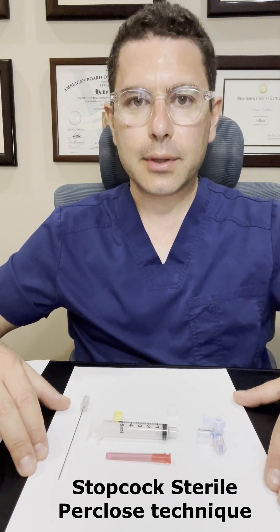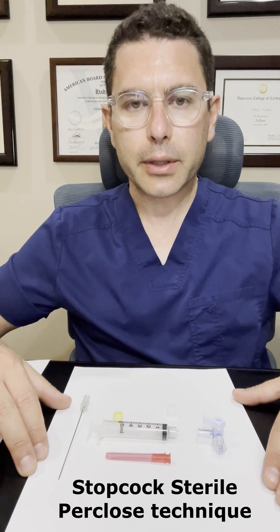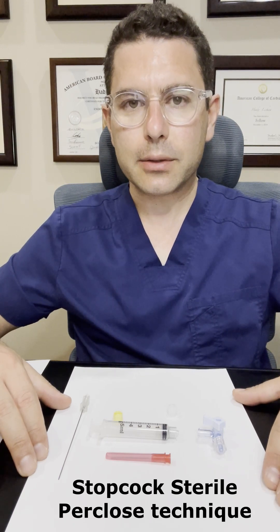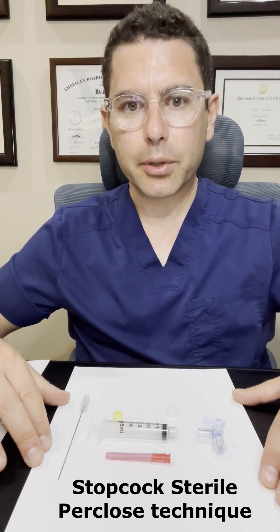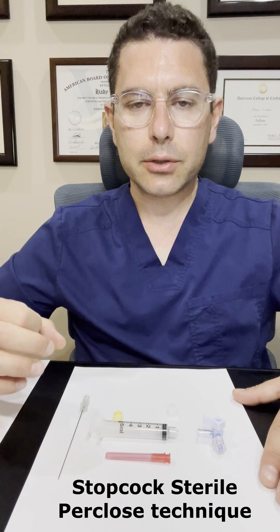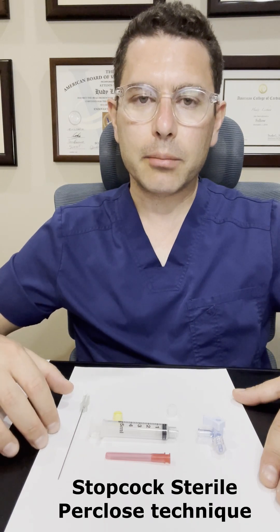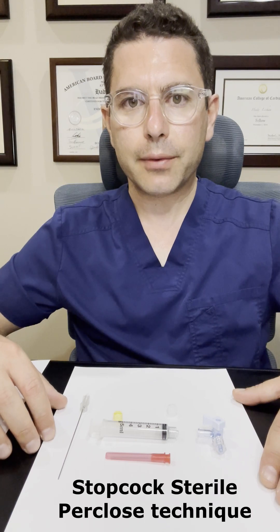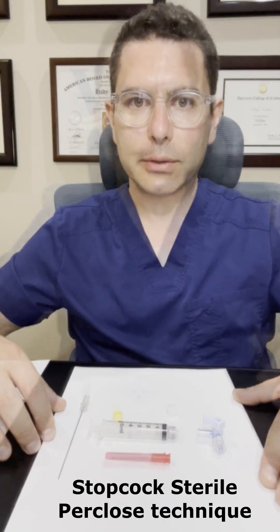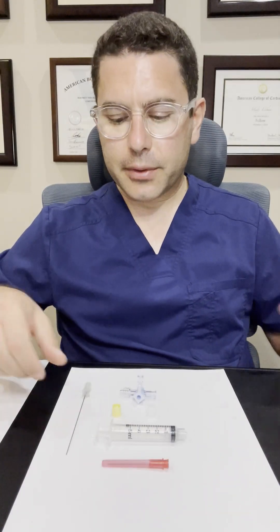The advantages of this stop-cock technique is not only it's simple and maintains sterility, but it also pulls up on the non-locking suture of the per-close, which cinches down on the arteriotomy site and minimizes the oozing around the large-bore sheath in a frequently anticoagulated patient. So let's describe the steps of this technique.